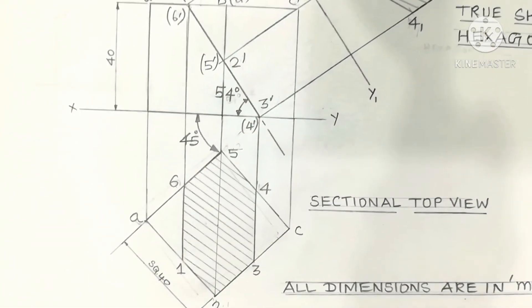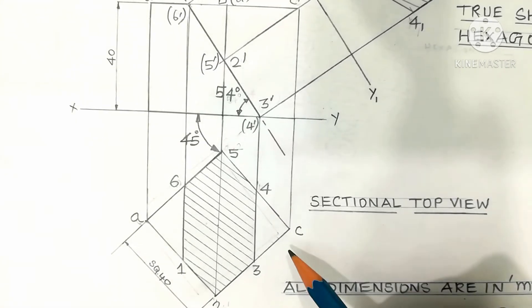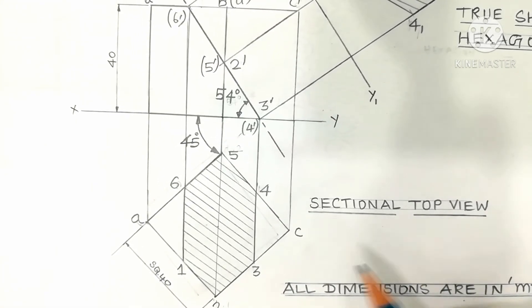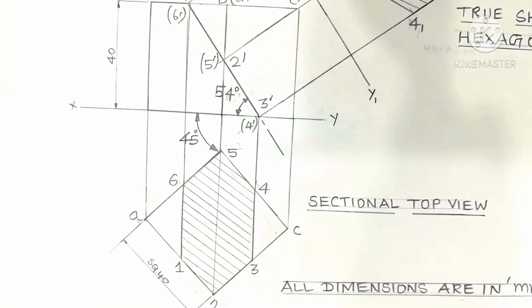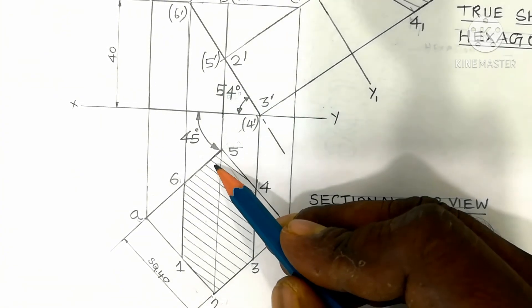This is the corresponding top view. It is called the sectional top view. The 1, 2, 3, 4, 5, 6 cut portions seen in the top view are indicated by sectional lines like this.